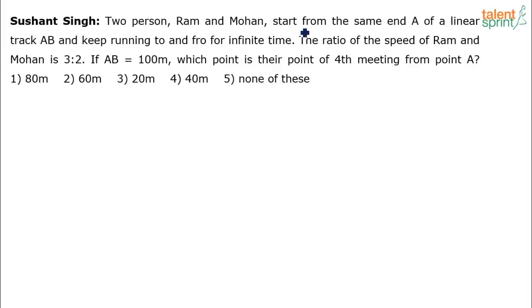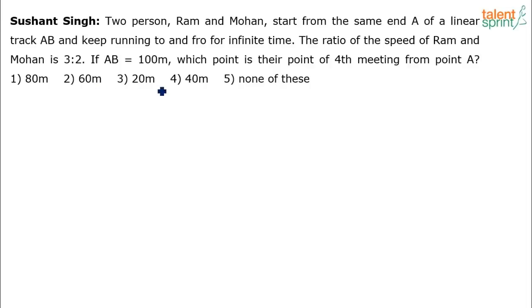Next problem: Two persons, Ram and Mohan, start from the same end A of a linear track AB and keep running to and fro for infinite time. The ratio of the speed of Ram to Mohan is 3 to 2. If AB is 100 meters, which point is their point of fourth meeting from point A? Options: 80m, 60m, 20m, 40m, or none of these.